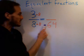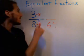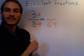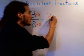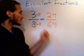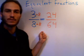We see that 8 times 8 is 64, and that's what we want on the bottom. And then we go 3 times 8 gives us 24, 24 on top. And there you have it, we've just created an equivalent fraction.